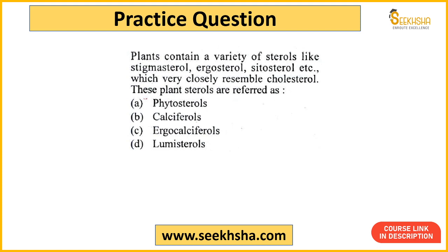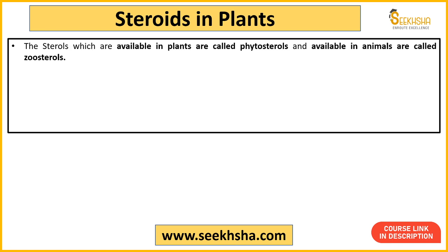Next question: plants contain a variety of sterols like stigmasterol, ergosterol, cytosterol, et cetera, which very closely resemble cholesterol. Cholesterol aapki body ke andar hota hai. Toh in plant sterols ko kya bolte hain? Option A: phytosterols, B: calciferols, C: ergocalciferols, D: lumisterols. Sterols basically a type of steroid hote hain, toh inhe phytosterol kaha jaata hai. Jaise hamare body ke andar steroids hote hain, waise hi yeh plant-based steroids hain. Steroids which are available in plants are called phytosterols, aur jo animals ke andar available hote hain unhe zoosterols kehte hain.